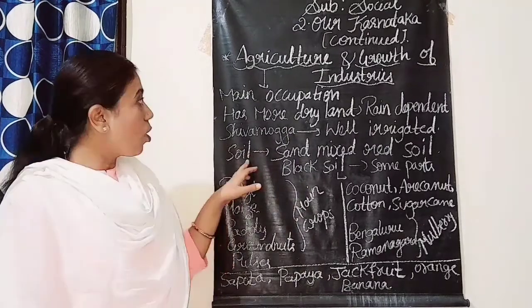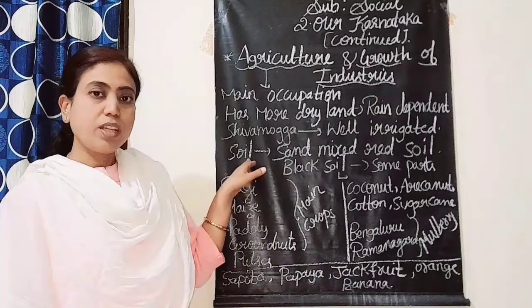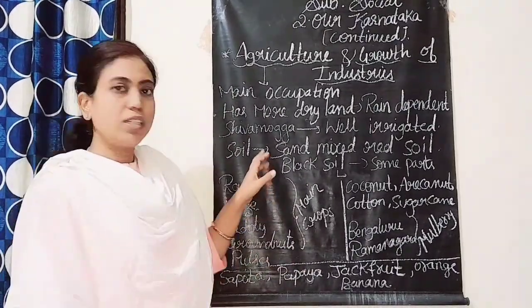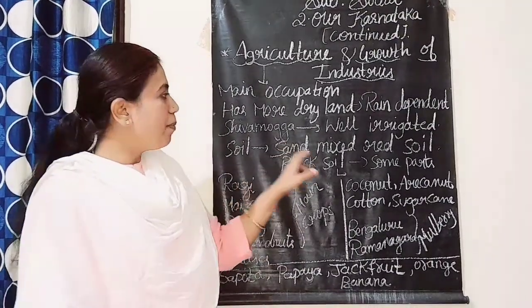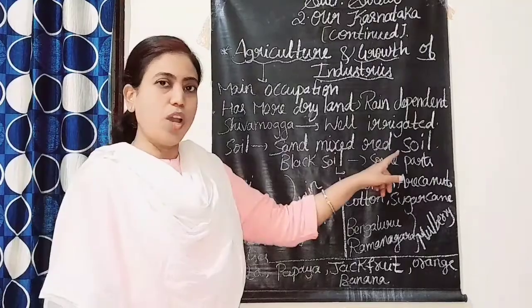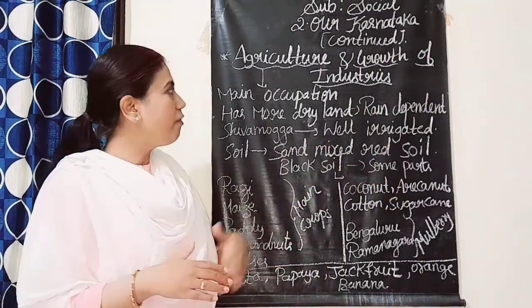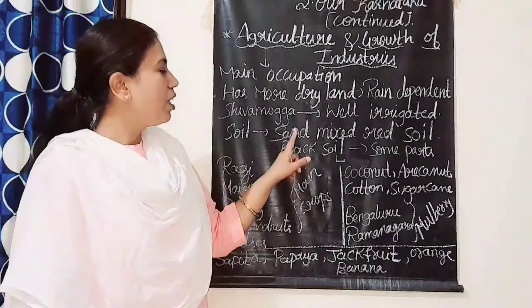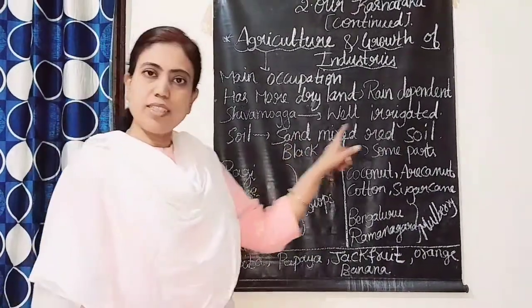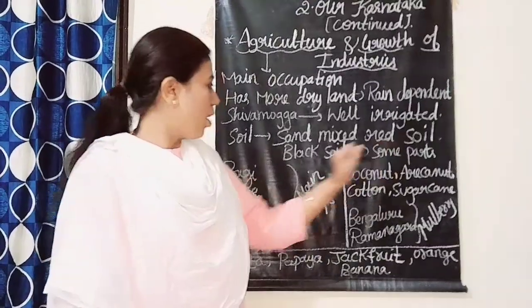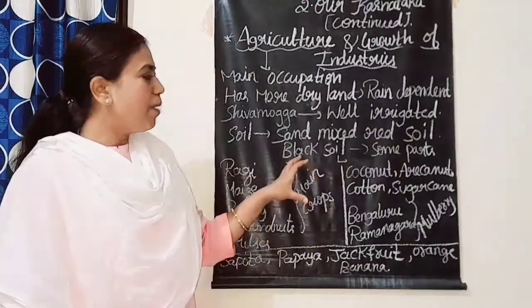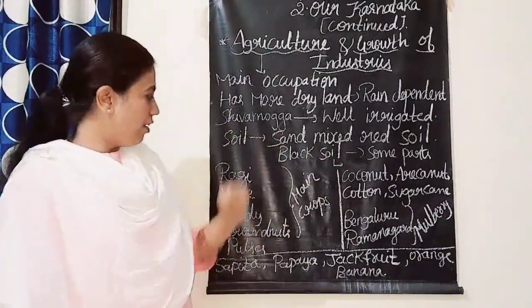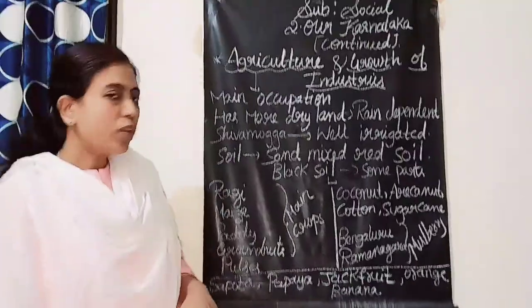The type of soil found mostly in this Bengaluru division is sand mixed red soil. Black soil is also found in some parts of this division.